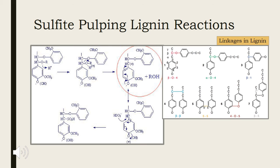There are three major reactions occurring during delignification in sulfite pulping. One reaction is sulfonation and two reactions are hydrolysis reactions.